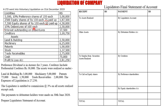Then they have debentures, interest outstanding on debentures, creditors, and various assets which include land and building, machinery, patents, stock, trade receivable, cash, and P&L account.